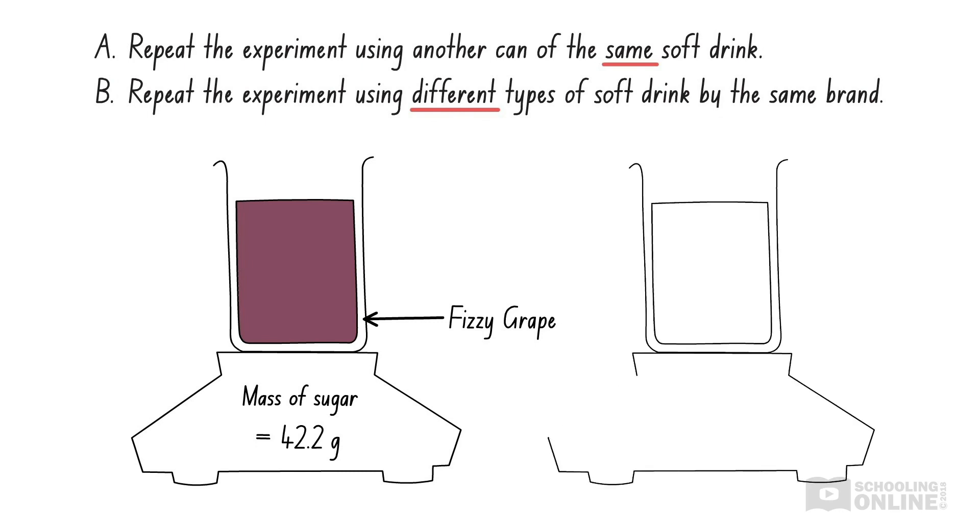However, if Sarah was to analyse different types of soft drink, then she can only compare the mass of sugar between these different types. For example, fizzy grape might contain lots of sugar, while diet fizzy grape might have very little. These results don't correspond to the same type of drink, so she hasn't improved the reliability of her experiment. Therefore, option B is incorrect and the answer is option A.